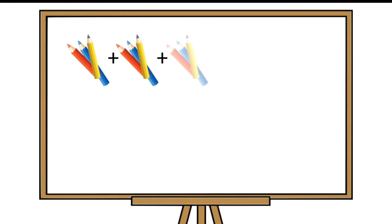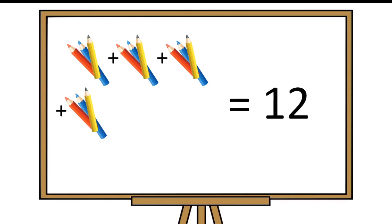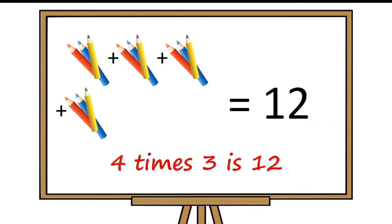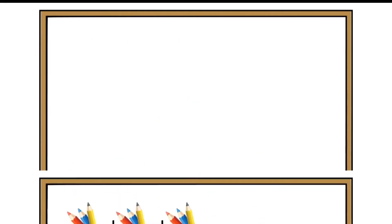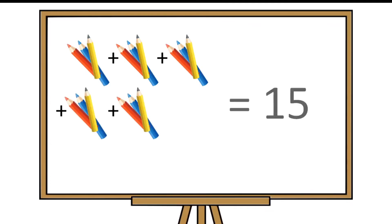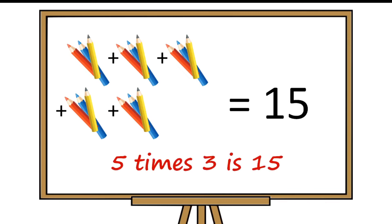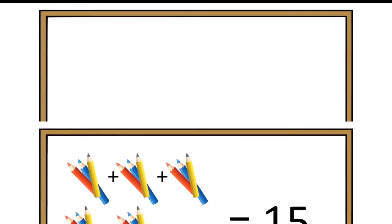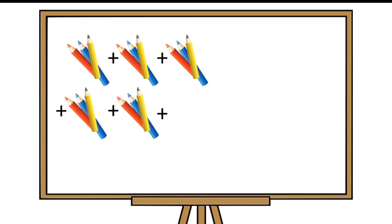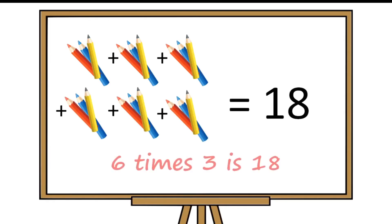Now, here there are four groups of three pencils. It means four times three is equal to twelve. Five groups of three pencils is equal to fifteen. It means five times three is fifteen. Now, here six groups of three pencils is equal to eighteen. It means six times three is eighteen.